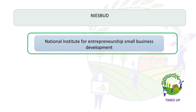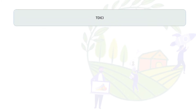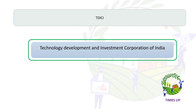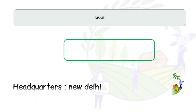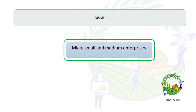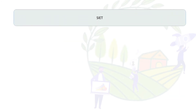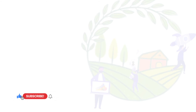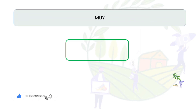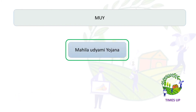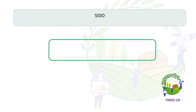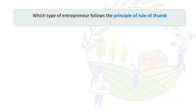The full form of NIESBUD is National Institute for Entrepreneurship and Small Business Development. The full form of MSME is Micro, Small and Medium Enterprises. The full form of SIET is Small Industries Extension Training Institute. The full form of MUI is Mahila Udyam. The full form of SIDO is Small Industries Development Organization.